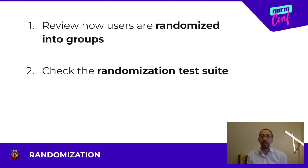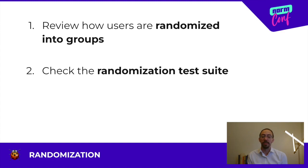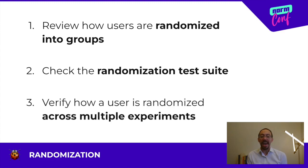Next, check the test suite. You should see at least one test that simulates users being assigned into groups. If we're running an experiment with an 80-20 split, our test suite should check that the groups are of the right size within a tight tolerance. Last, you should verify how a user gets randomized over multiple experiments. A common issue I see is randomization that puts the same user into the control group every single time. We typically want randomization to be different for each experiment.